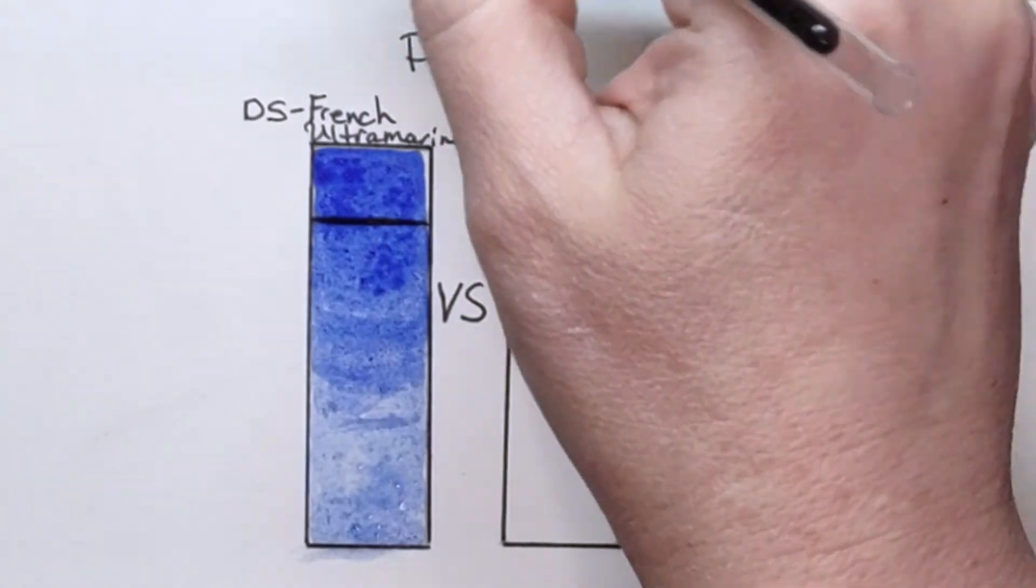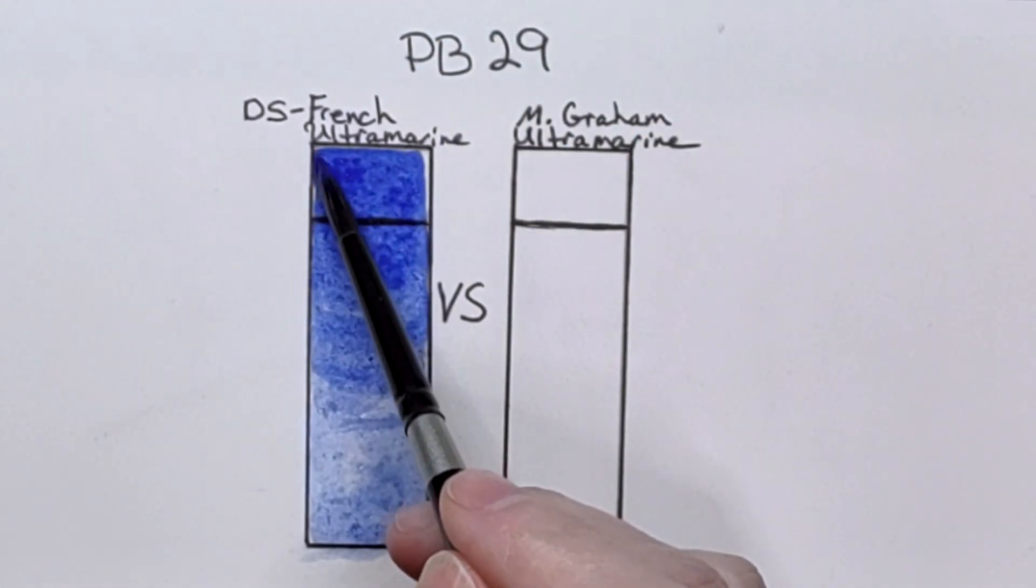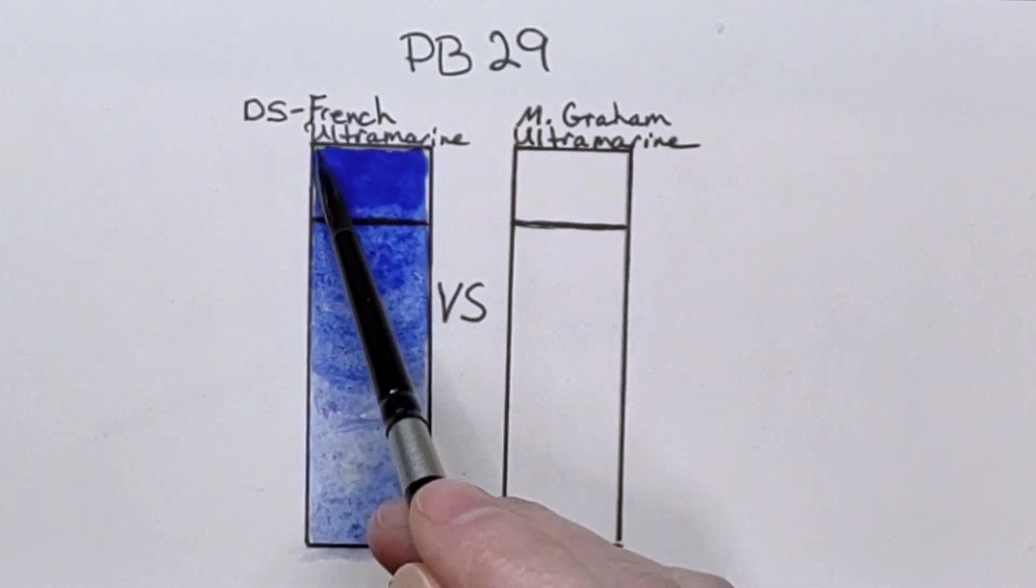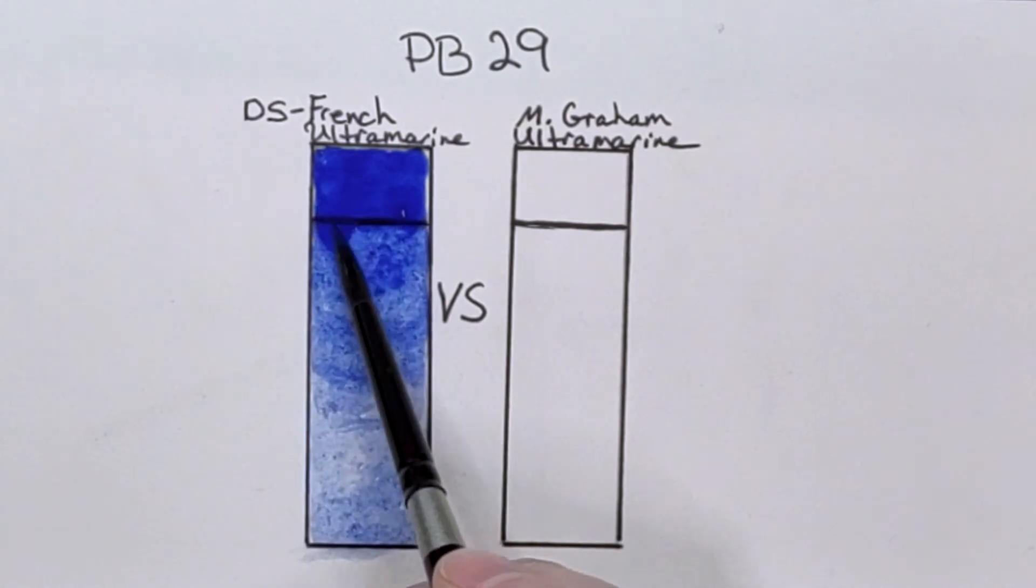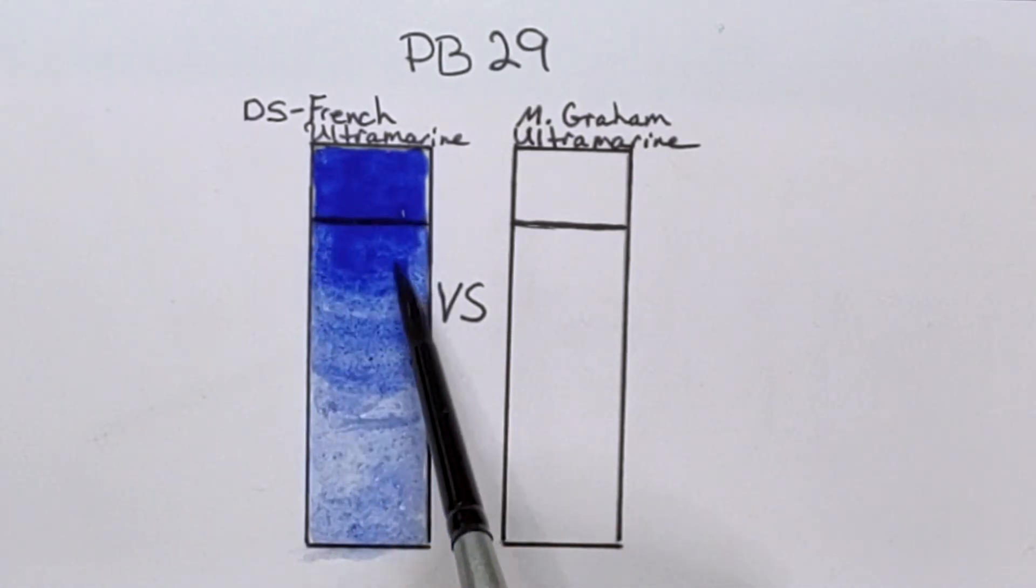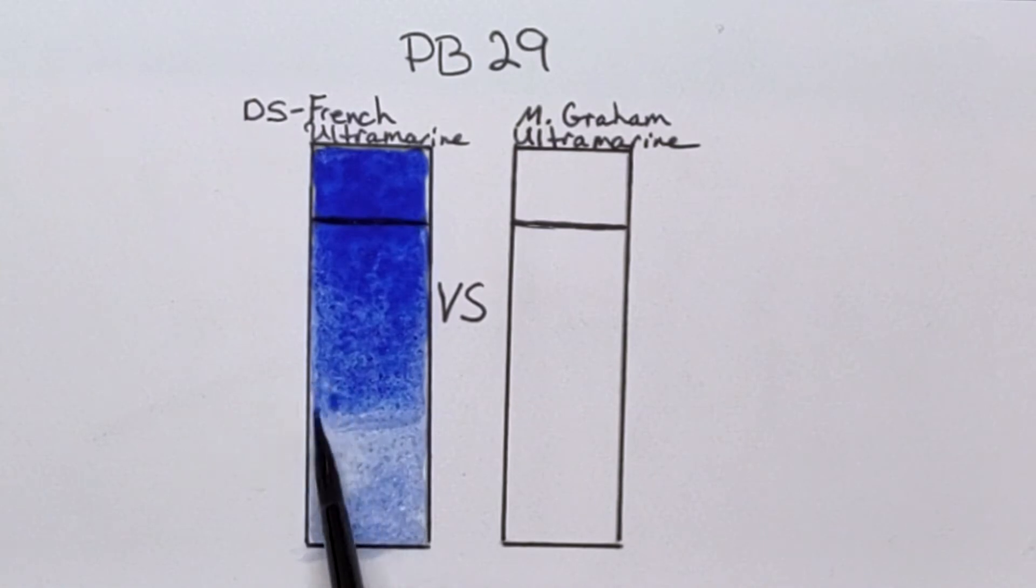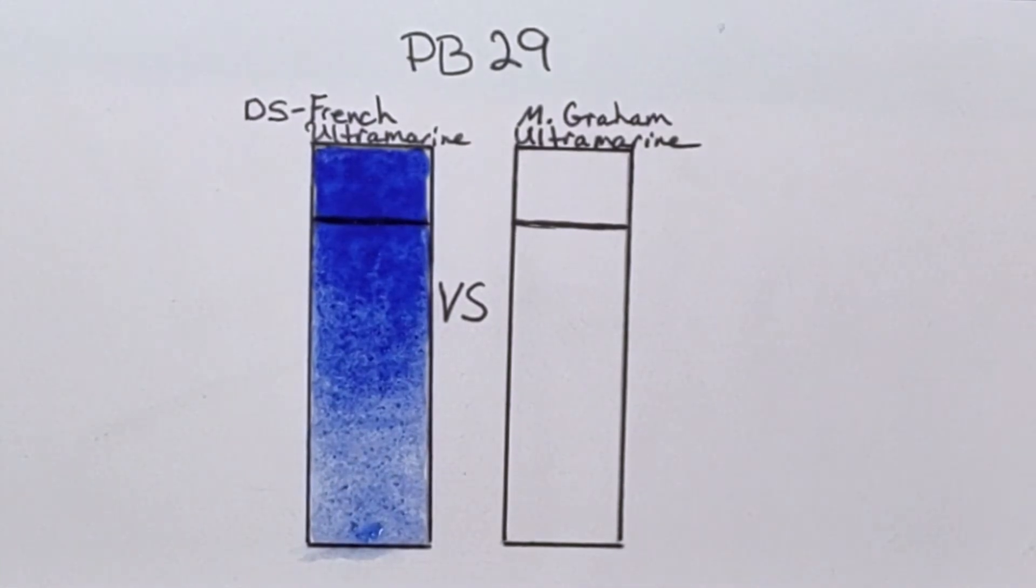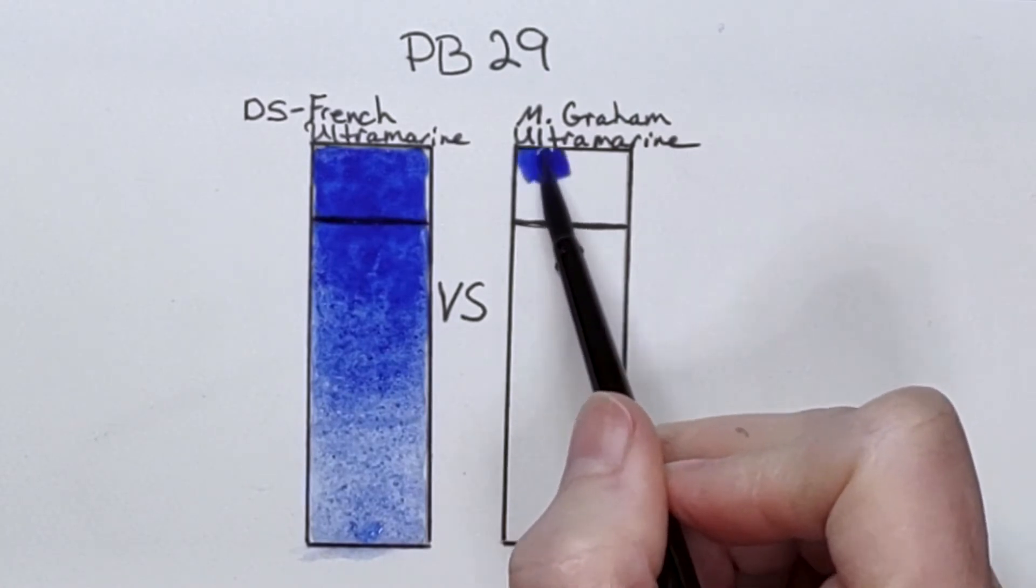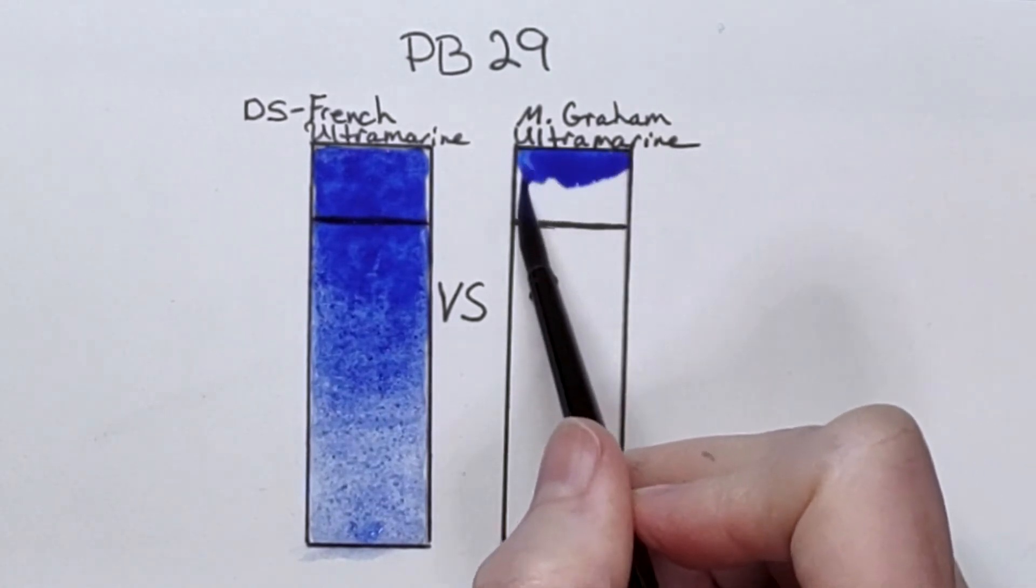While that's still wet, I'm going to come in here and see a little bit of the movement on that. I probably should have used a bigger brush too. Right away I just see that the M. Graham, loose on the palette, has a lot more movement to it.